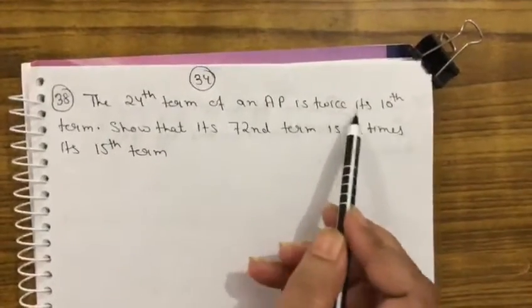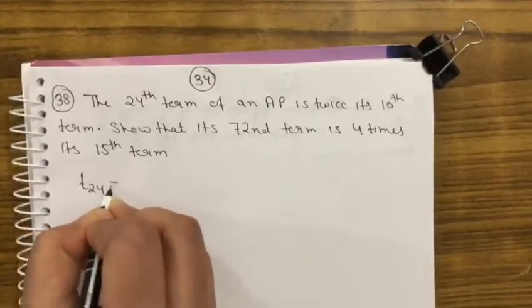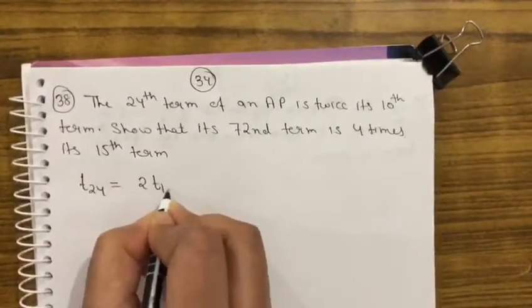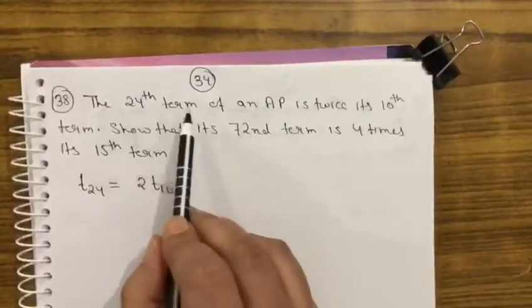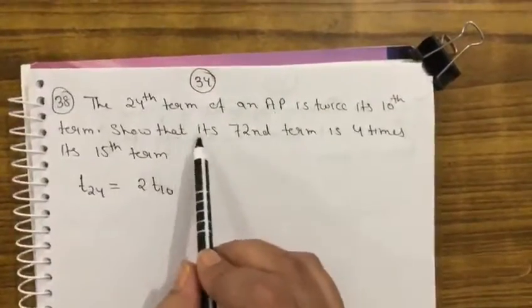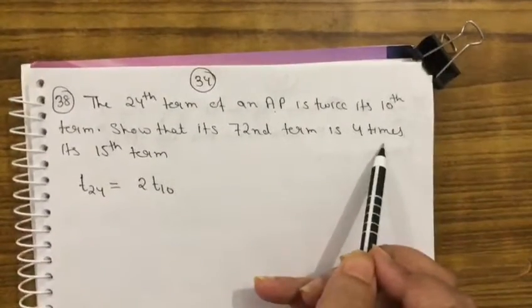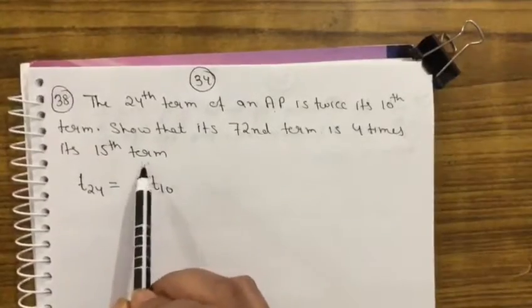The 24th term of an AP is twice the 10th term. Then show that the 72nd term is 4 times its 15th term.